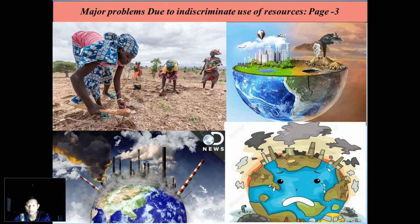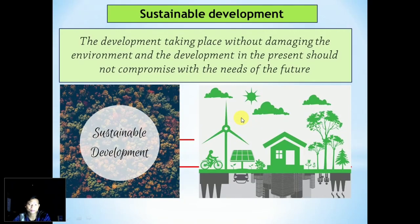Third, it will lead to a global ecological crisis such as global warming, ozone layer depletion, environmental pollution, and land degradation. So just know these major problems due to indiscriminate use of resources. Next, we'll see what is sustainable development.